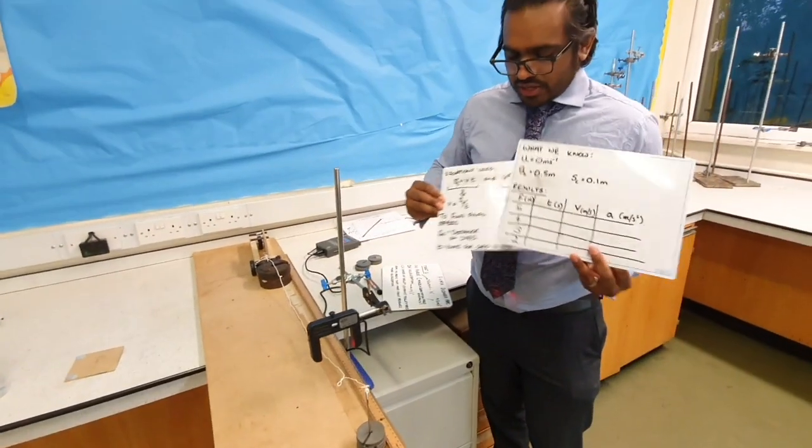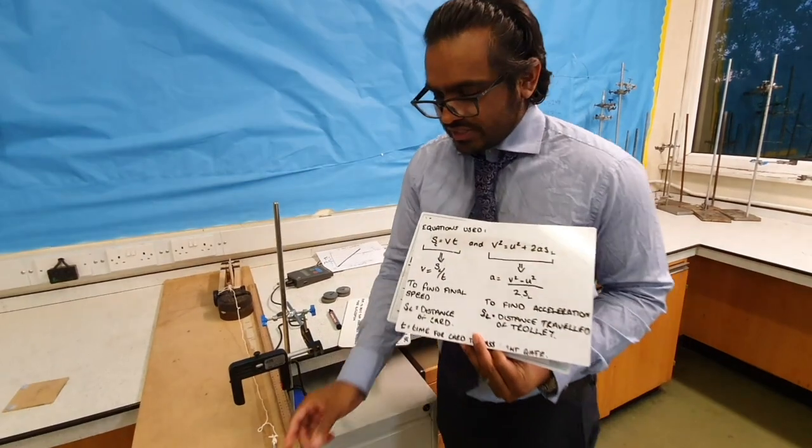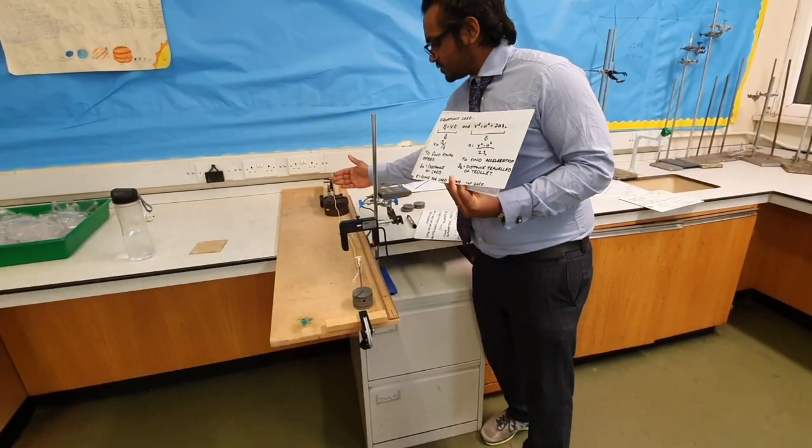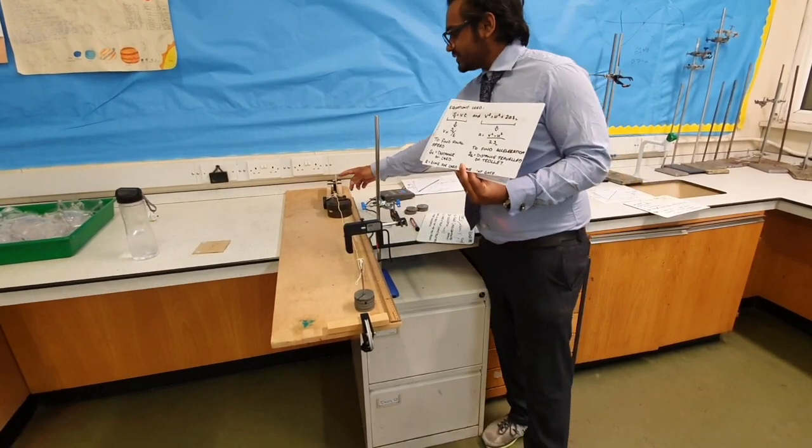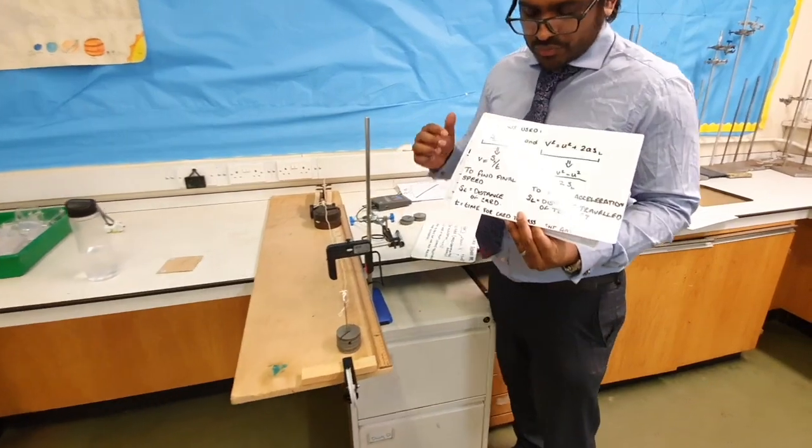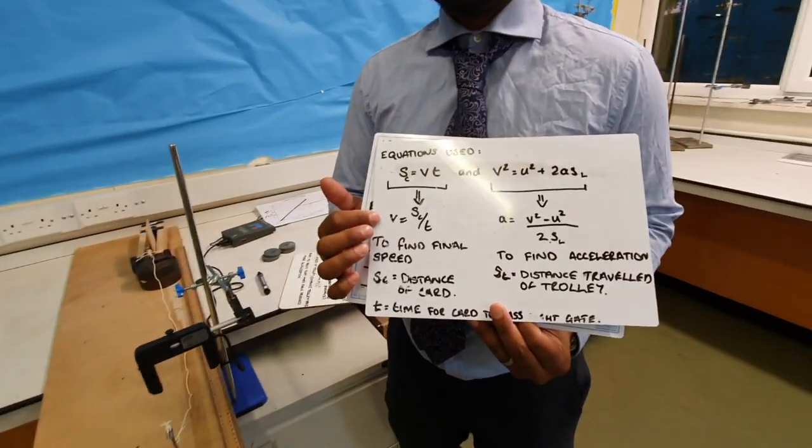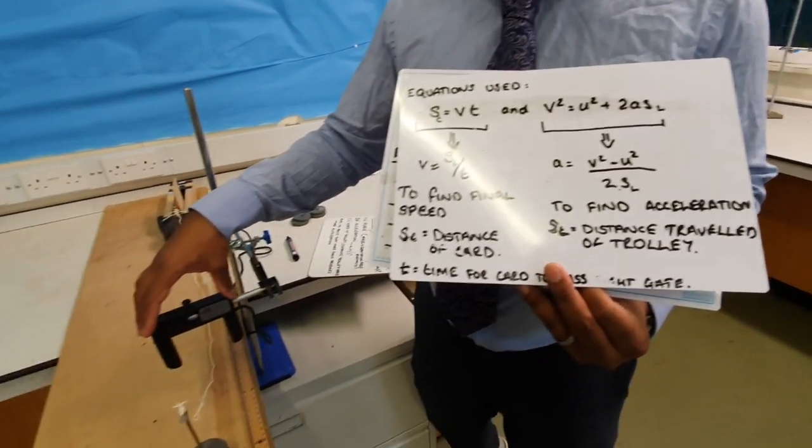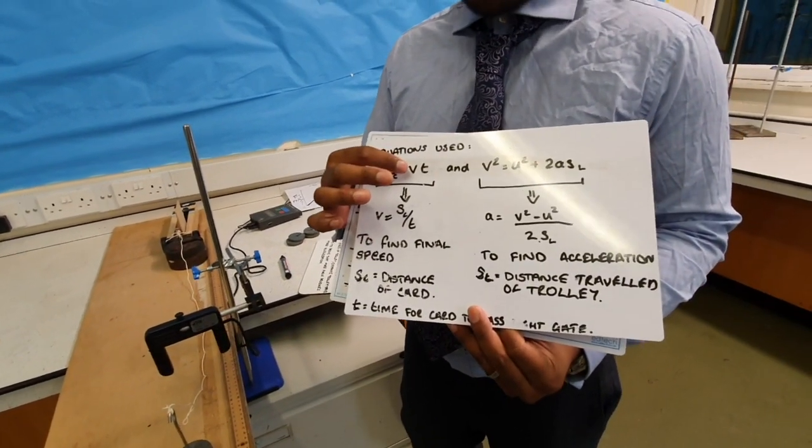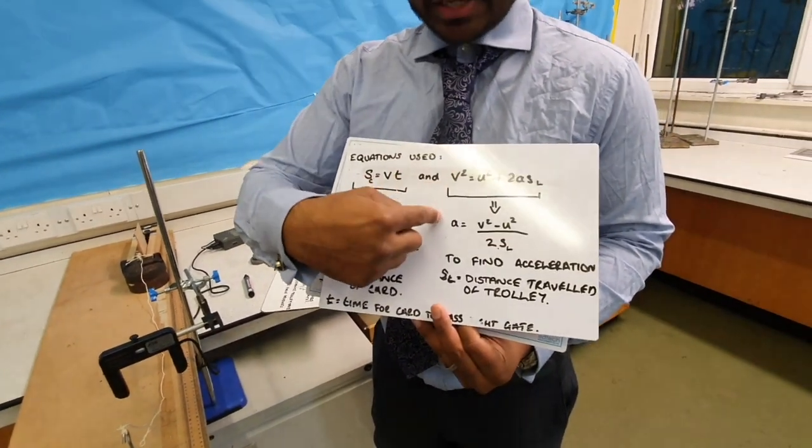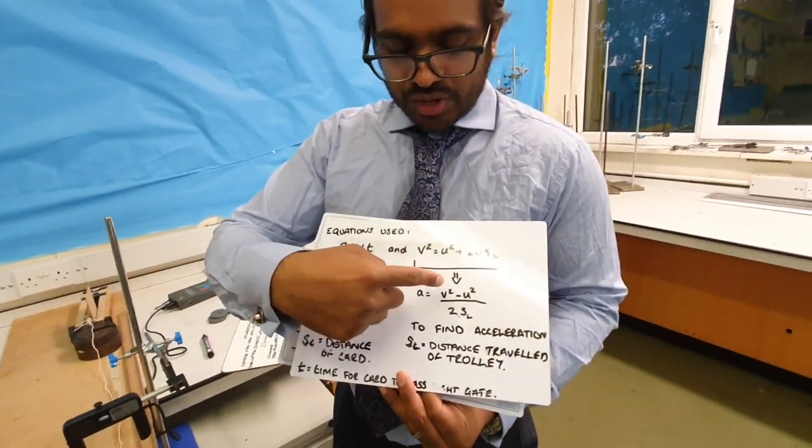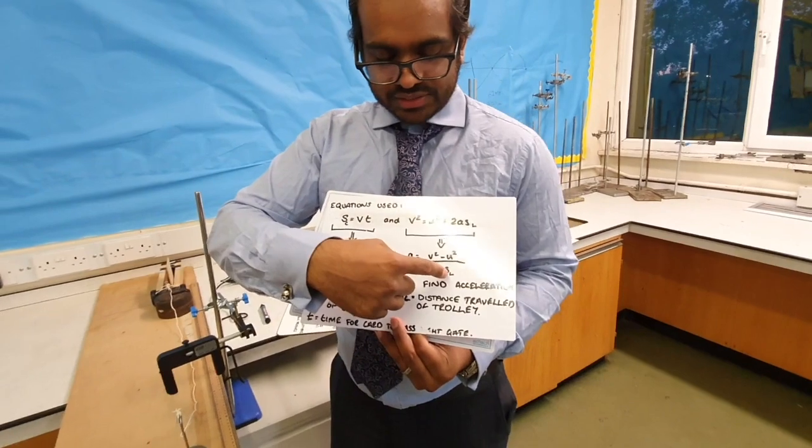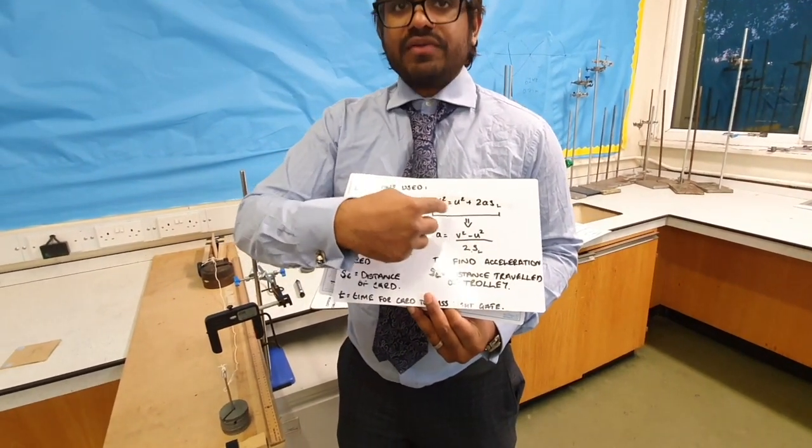If I release the mass, the trolley will pass through the light gate and the light gate will read the distance of the card. We can calculate our final velocity because we know our final time, which is given by the light gate, and the distance of the card, which gives us a final velocity. We can use that final velocity in this equation. Our initial velocity is 0, our final velocity is calculated, and we know our distance of the trolley travelled, so we can find that acceleration.